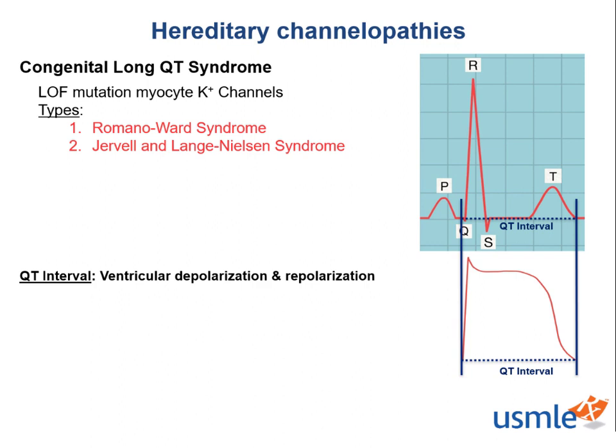A normal QT interval is less than 420 ms in duration, so for each large 200 ms box, a normal QT interval typically won't exceed 2 large boxes. In the example shown, the QT interval is quite prolonged, spanning almost 4 large boxes. Just as drugs that block potassium channels can prolong the QT interval and increase the risk for torsades de pointes, congenitally dysfunctional potassium channels can act in the same way. When potassium channels can't function, ventricular repolarization is prolonged, increasing the risk of torsades and ultimately sudden cardiac death.